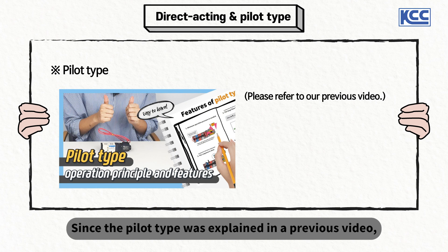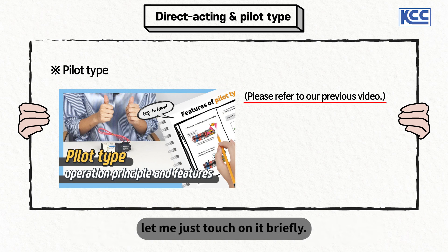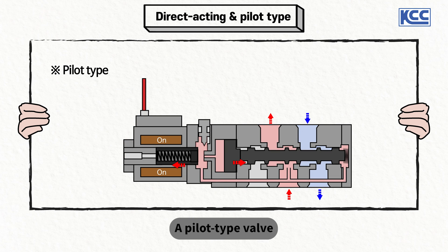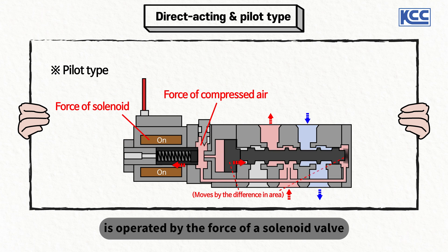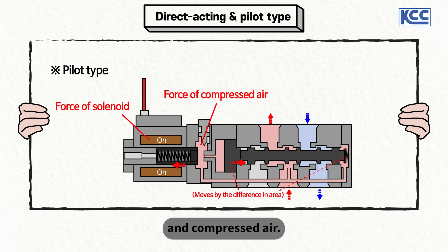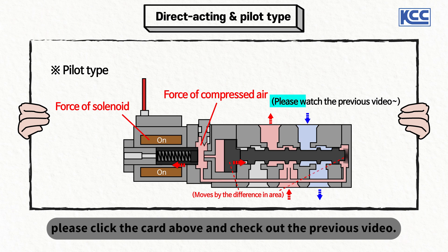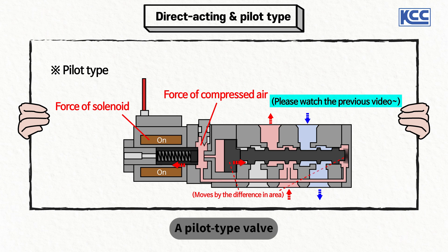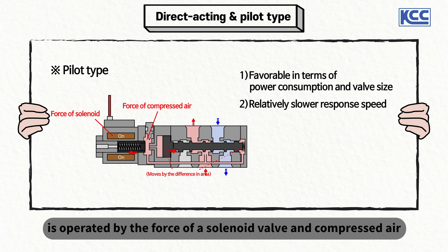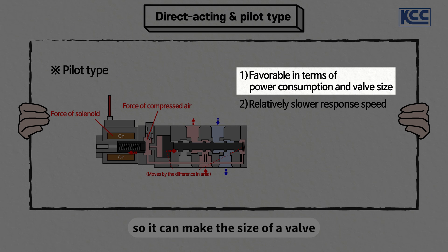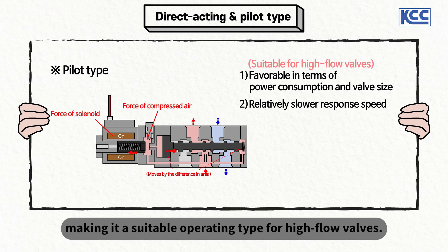Since the pilot type was explained in the previous video, let me just touch on it briefly. A pilot type valve is operated by the force of a solenoid valve and compressed air. So it can make the size of a valve and power consumption relatively smaller, making it a suitable operating type for high-flow valves.